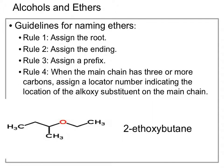If the main chain has three or more carbons, we also must assign a locator number indicating the location of that alkoxy substituent. In this example, we have a carbon chain that is four carbons long. It's an alkane, and so we have butane. Our ether substituent consists of two carbons, making it an ethoxy substituent. But we can see that ethoxy substituent is coming off our second carbon. Therefore we have the name 2-ethoxybutane.